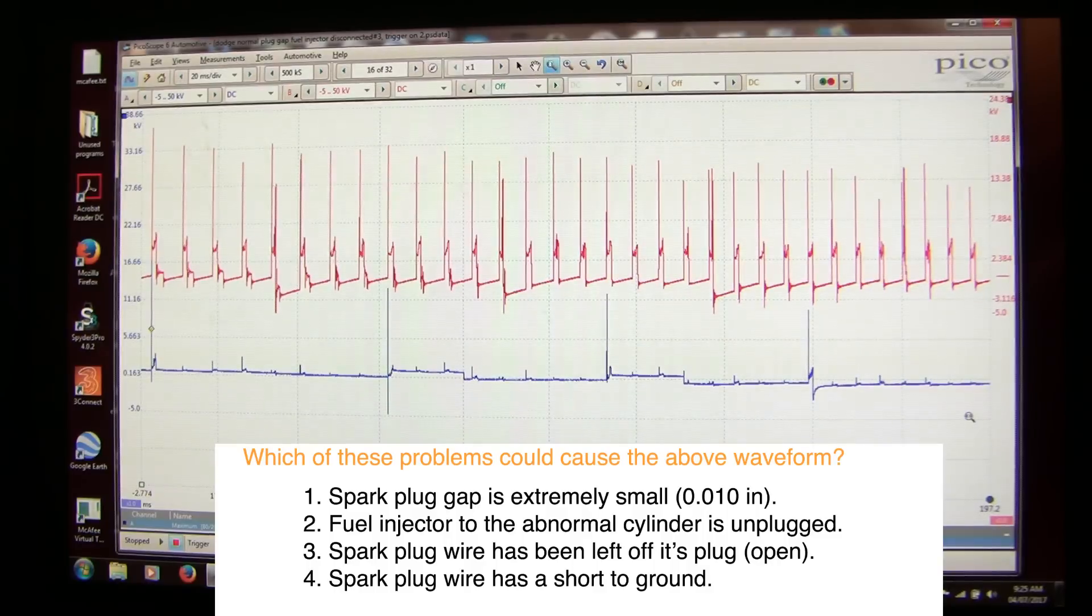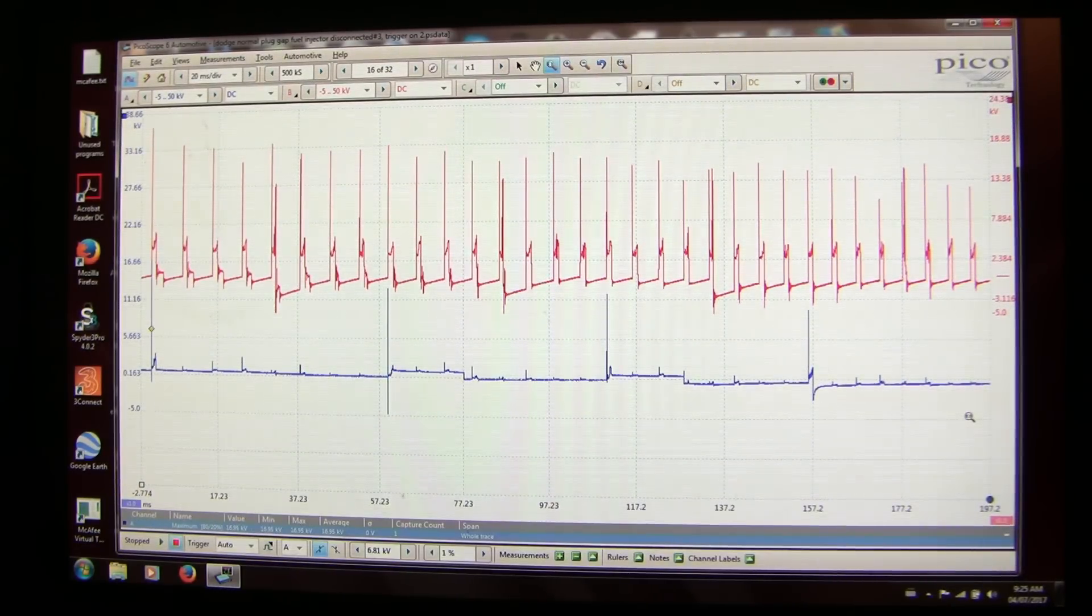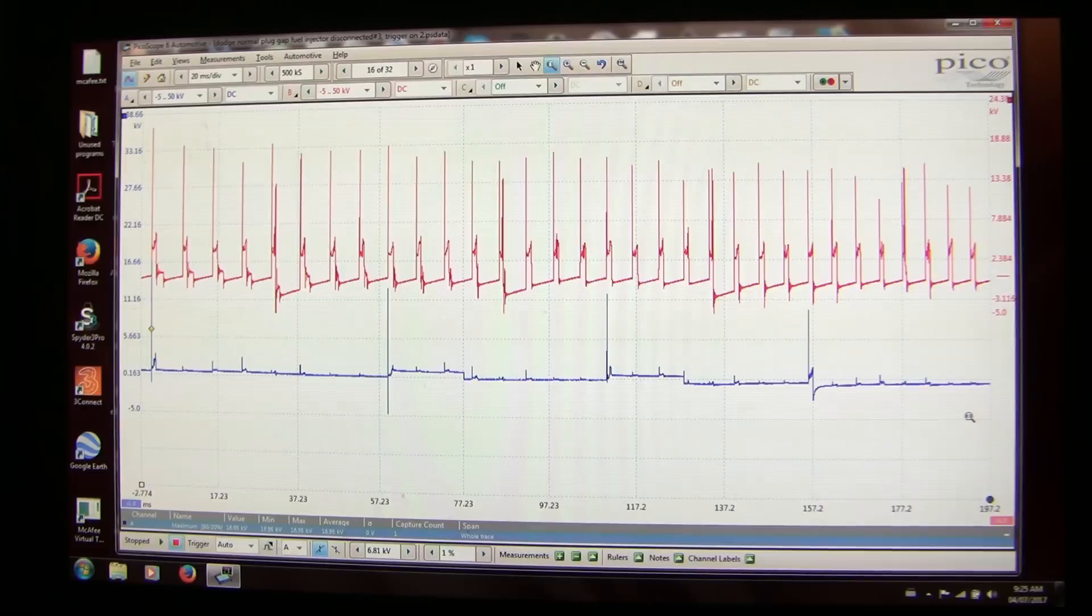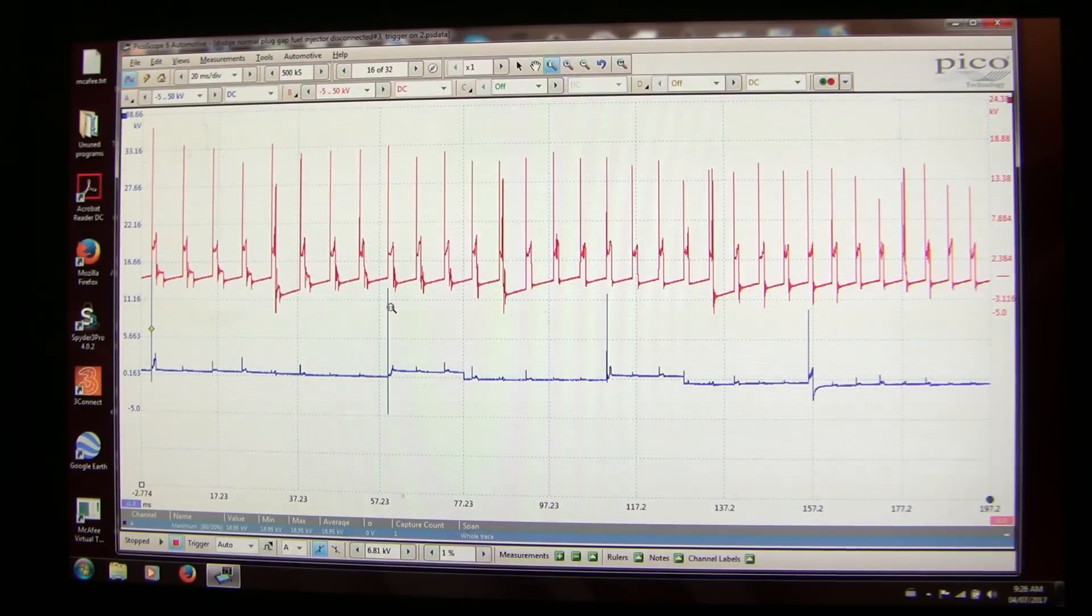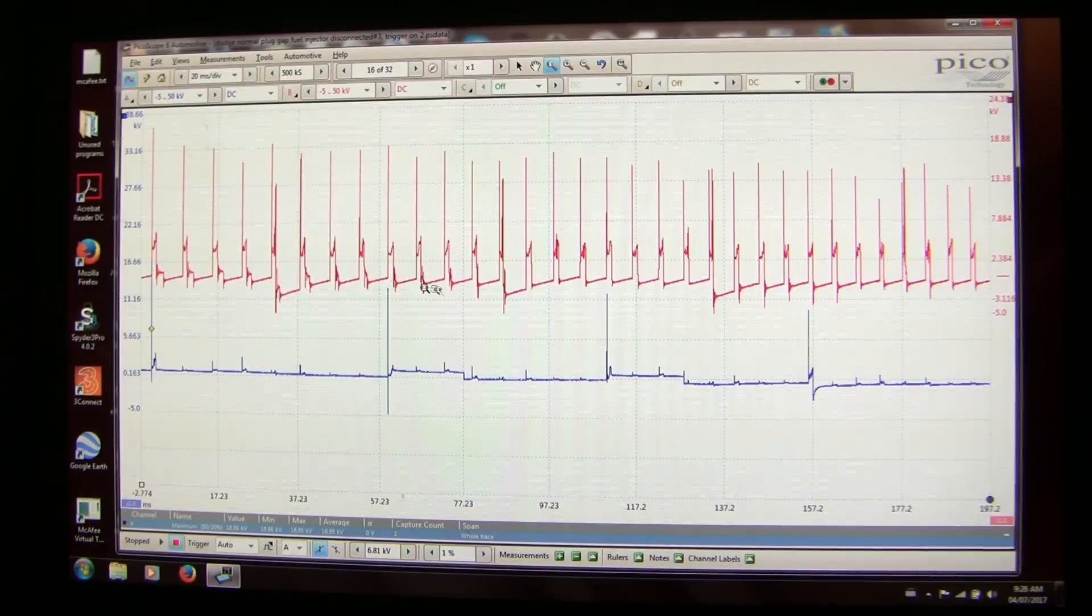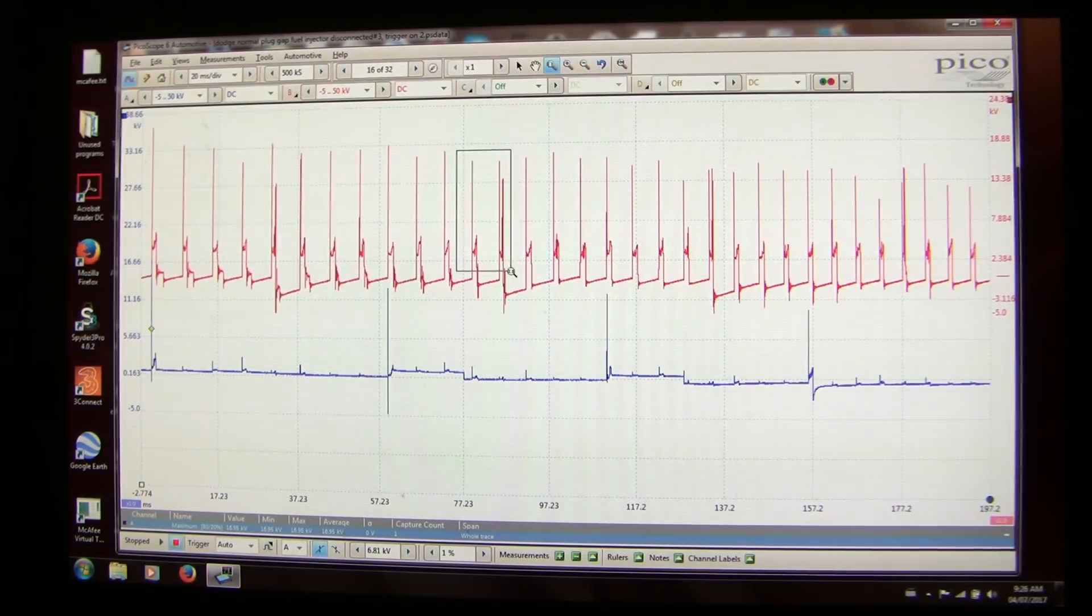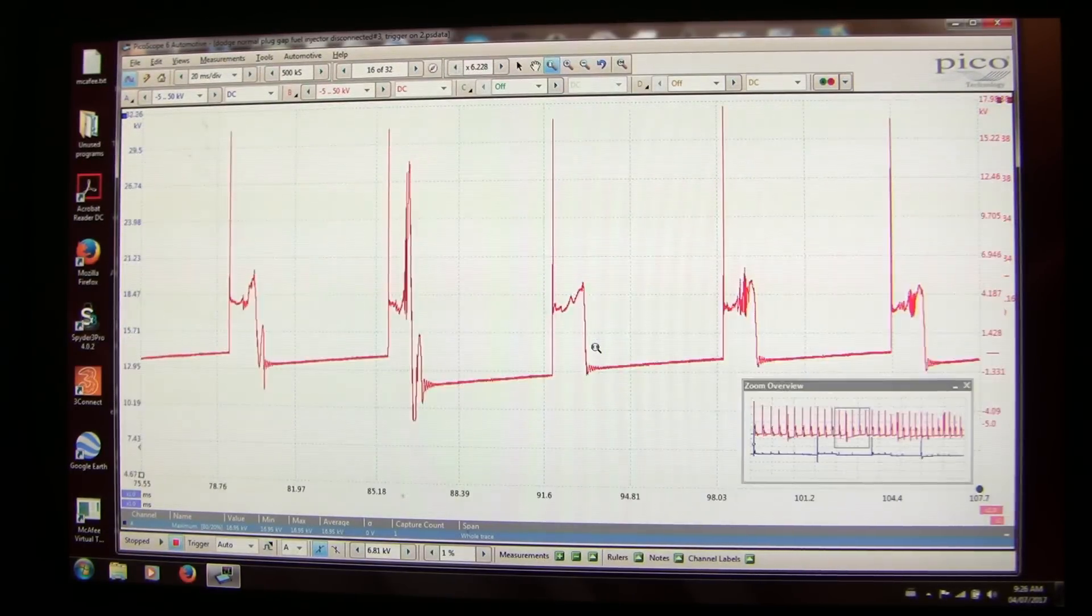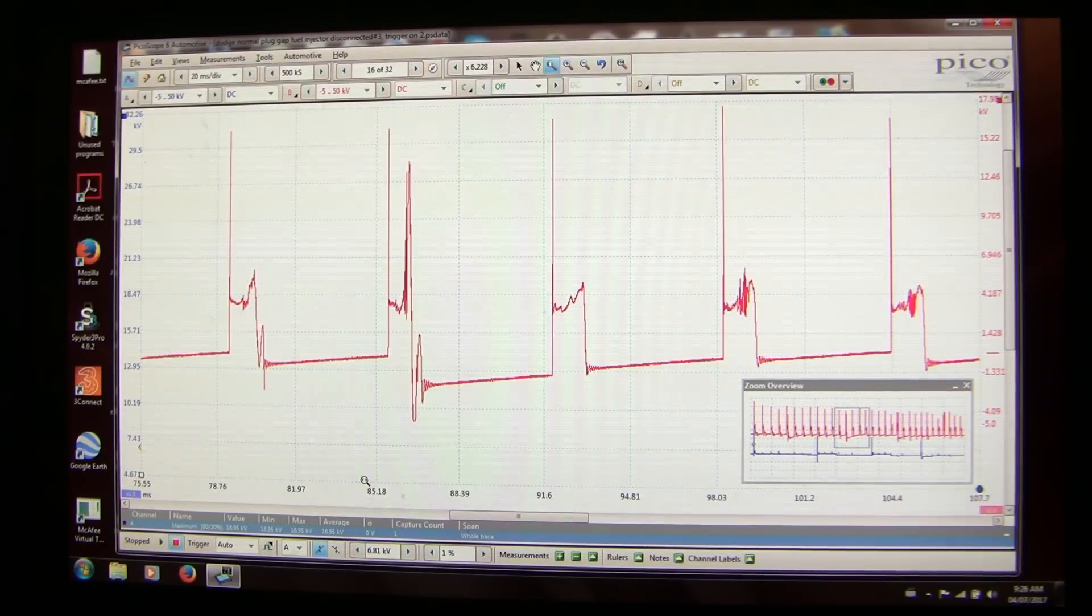This is waveform B. I must say that at idle there was no abnormality I could see, but I think you can clearly see there's an abnormality with snap throttle. Let's zoom in on this. Now I should mention that we're triggering on cylinder number two, so you should be able to work out which is a bad cylinder. Let's zoom in a little bit. We'll show you the burn line. So there's the burn line right there. What's the diagnosis?